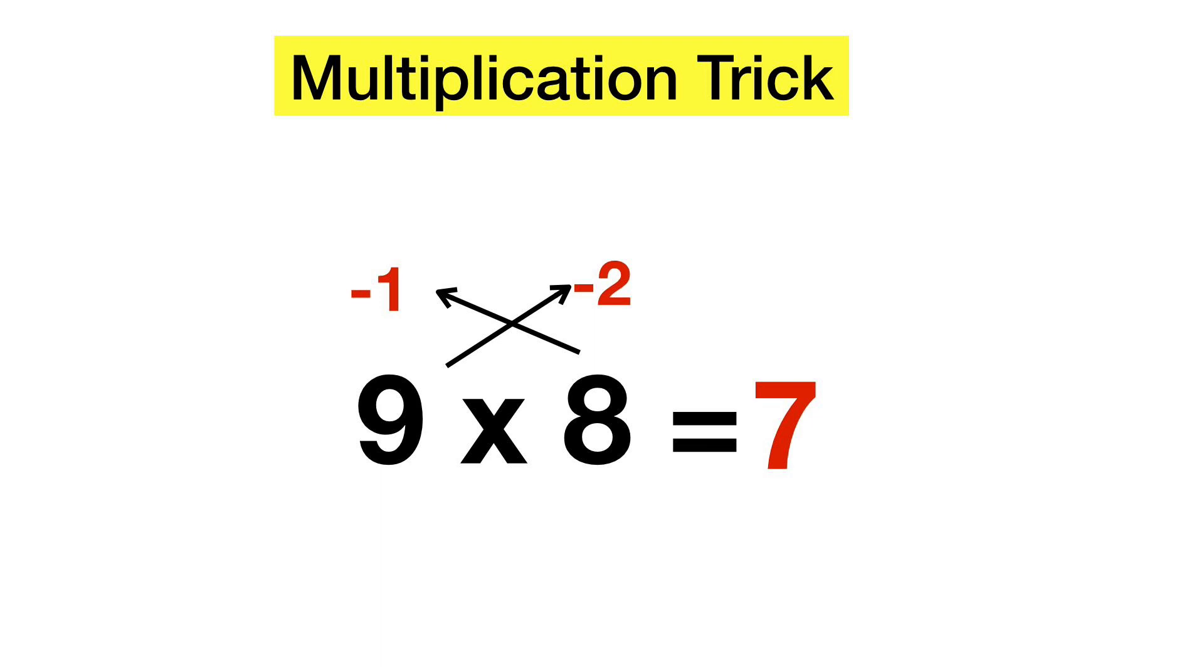And the second part of the answer, in this case, relies on multiplying these two parts, negative 1 and negative 2. Now, as you may know, a negative times a negative is a positive.